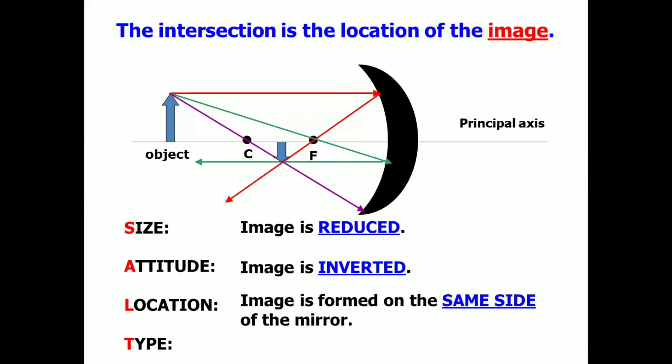For the location, the image is formed on the same side of the mirror. And when an image is formed in the same side of the mirror, it means that we form a, what we call, real image. And like virtual image, real image can be projected on a screen. And these are the characteristics of the image we form in this concave mirror.